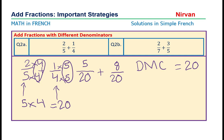Et maintenant, nous pouvons voir que nous pouvons ajouter ici cinq plus huit sur vingt. Cinq plus huit égale treize. Et le dénominateur reste la même. Alors, la réponse est treize sur vingt. Très bien.